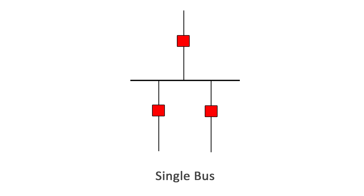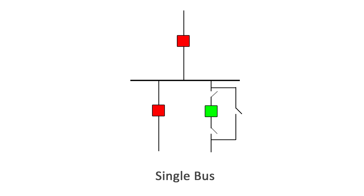Maintenance of any circuit breaker requires shutdown of the corresponding circuit line, and maintenance of the bus requires a complete shutdown of the bus. A bypass switch across the breaker should be used for maintenance of the corresponding breaker. Circuit protection is disabled in this case.